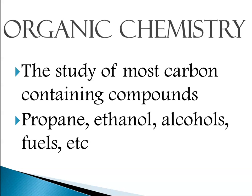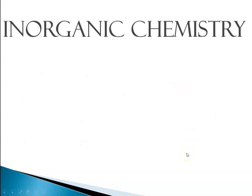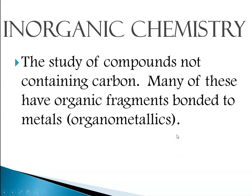Examples of organic chemistry include things like propane, ethanol, other alcohols, and fuels such as petrochemicals. The way you know it's organic is the compounds will contain carbon. This leads us to compounds that don't contain carbon, which is inorganic chemistry.